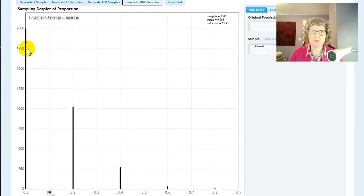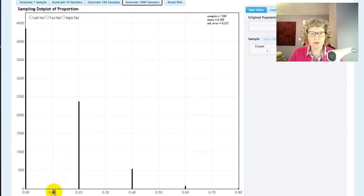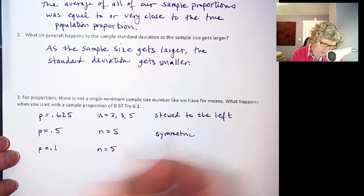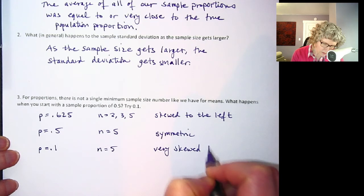Wow look at the left here. You can see the average is 0.1 but this is very skewed to the right. And that's because only 10% of the population were born in Oregon. So we're much more likely to get a smaller sample proportion than a larger one. So p equals 0.1 and n equals 5, that's very skewed to the right.